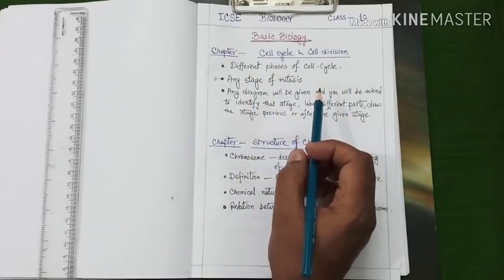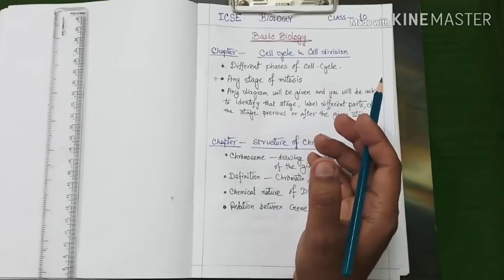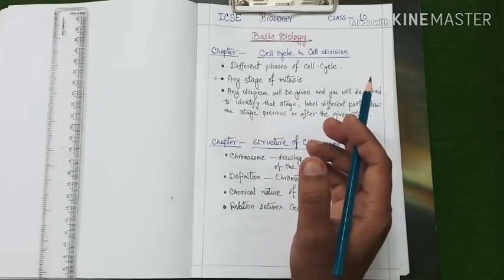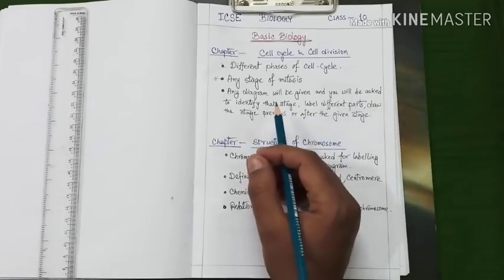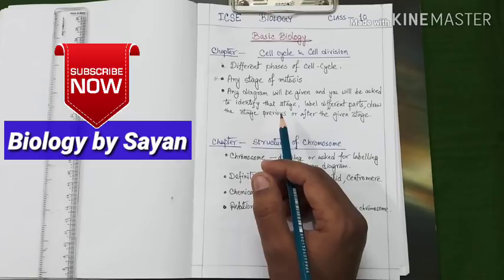This question should be prepared with the diagram showing the different phases like G1, S, G2 phase, and M phase. You may also prepare this diagram with the help of G0 phase. And you need to know the function of that G0 phase.